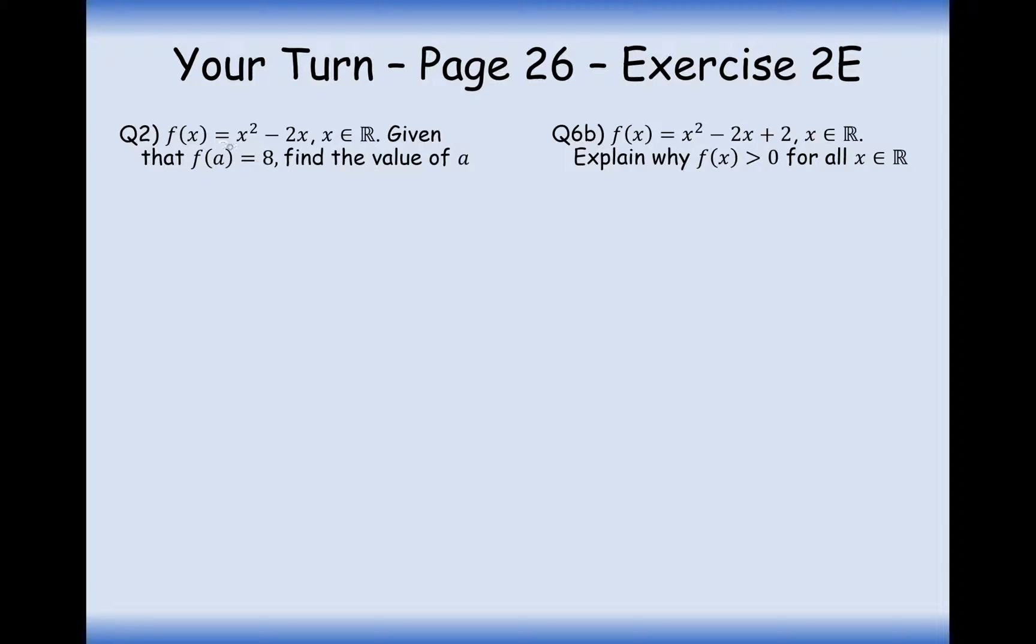So in this case here, f of x equals x squared minus 2x, where x is a real number. Given that f of a, so the input number here is a and the output number is 8, find out what that input number could have been. So what we'll do then is we'll input a into our equation, into our function, and the output of this is going to be 8. So let's try and solve this now. We've got a quadratic equation here, so we need to make 0 on one side.